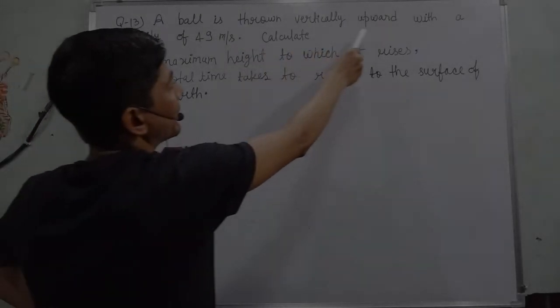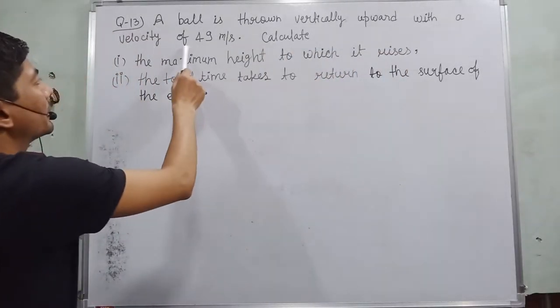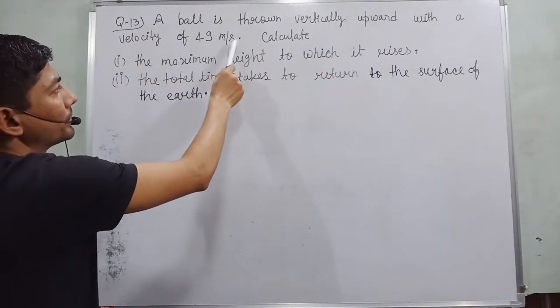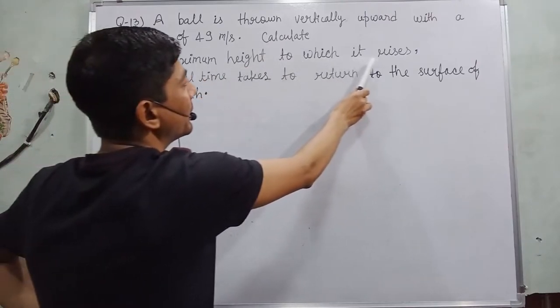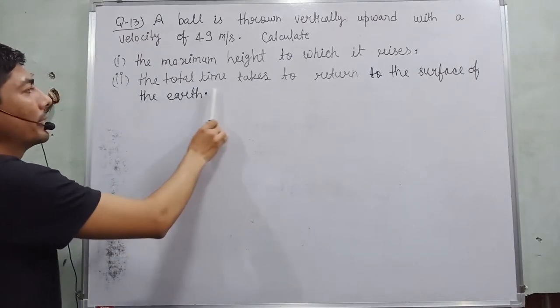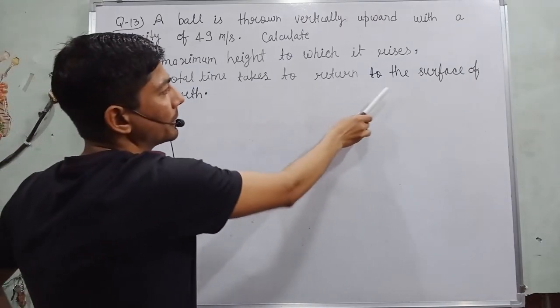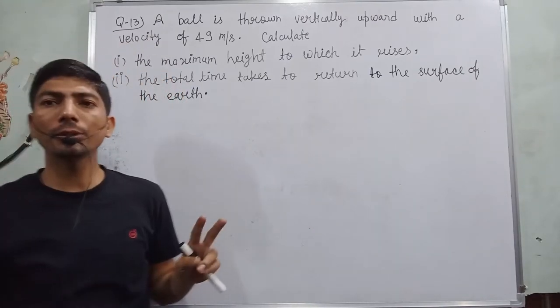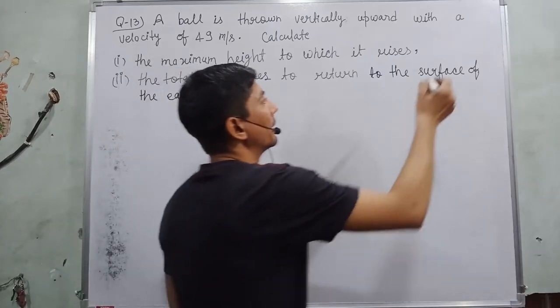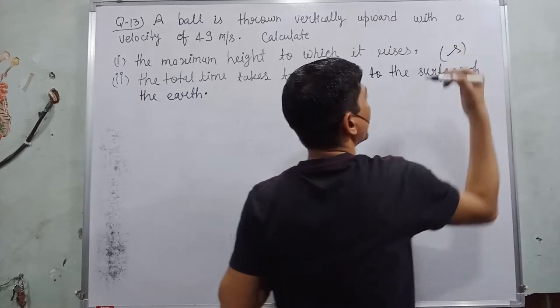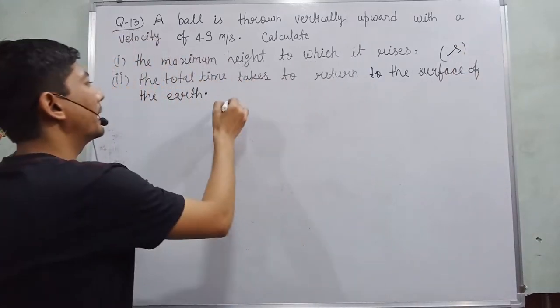A ball is thrown vertically upward with a velocity of 49 meter per second. Calculate first, the maximum height to which it rises. Second, the total time it takes to return to the surface of the earth. In this question, two answers will be required. First one is height s, and second one is time t.